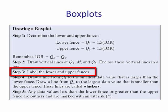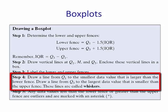Then you label the lower and upper fences. And then you draw a line from Q1 to the smallest value that is larger than the lower fence. Draw a line from Q3 to the largest data value that is smaller than the upper fence. These lines are called whiskers.